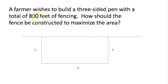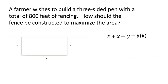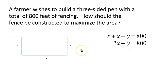We're told he has 800 feet of fencing. So this x plus this x plus this y would use up the full 800 feet. That's our first equation: x plus x plus y equals 800. Of course x plus x is 2x, so we get 2x plus y equals 800. It'll be helpful to solve for y, so subtracting 2x from both sides we get y equals 800 minus 2x.